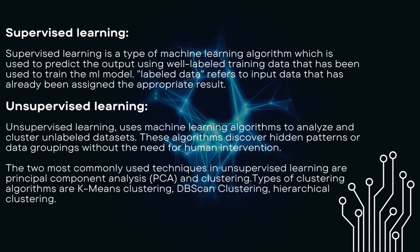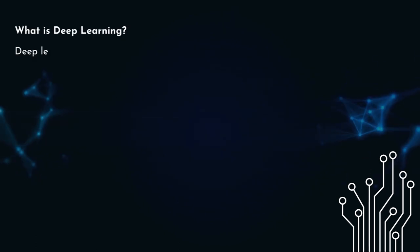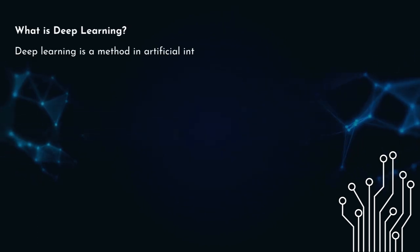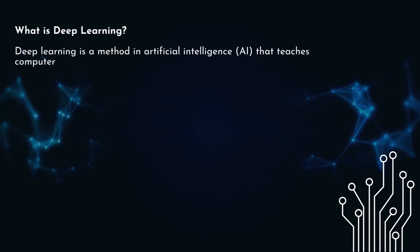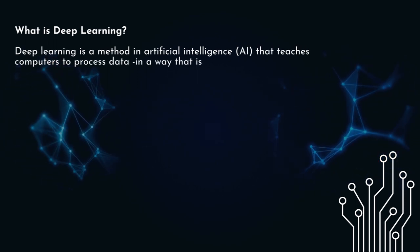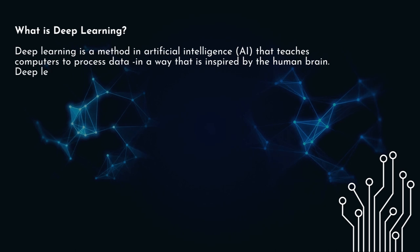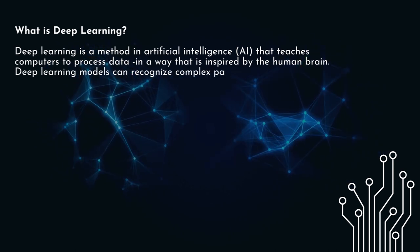What is deep learning? Deep learning is a method in artificial intelligence that teaches computers to process data in a way that is inspired by the human brain. Deep learning models can recognize complex patterns in pictures, text, sounds, and other data to produce accurate insights and predictions.